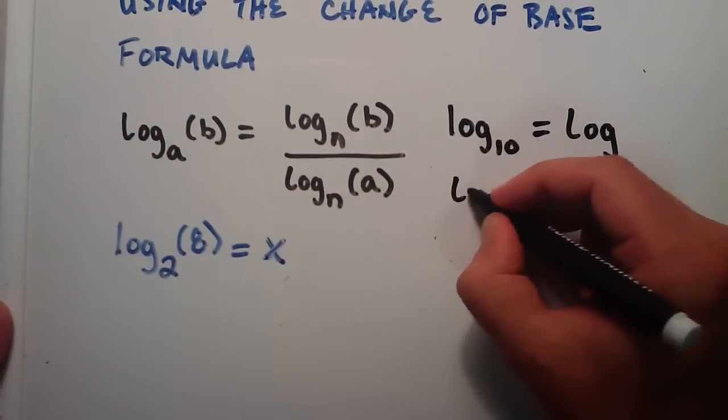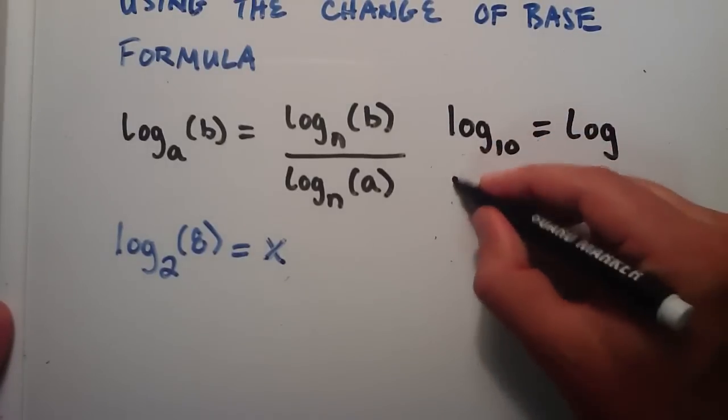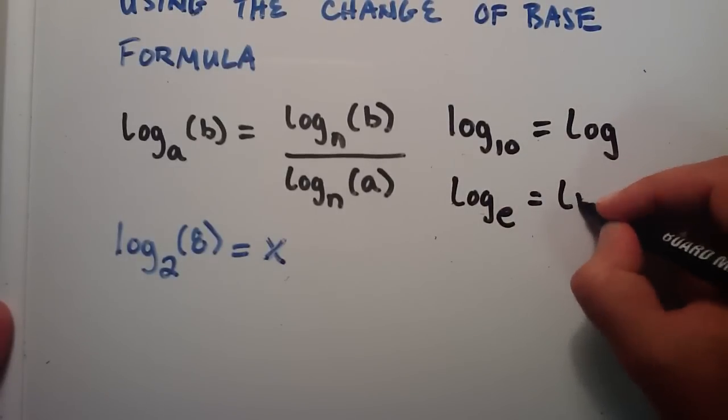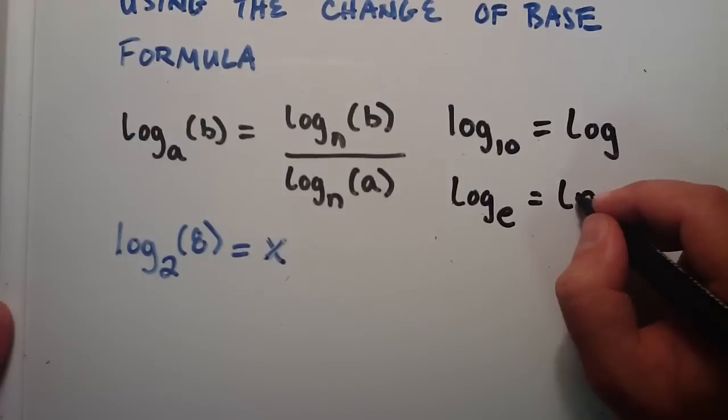The other choice that's really nice is the natural log, log base E, which is equal to the natural log. So the ln button on our calculator is the log base E.